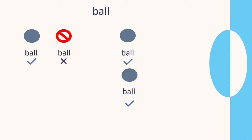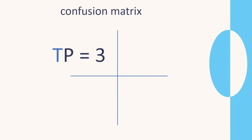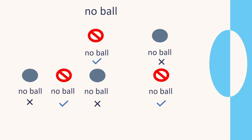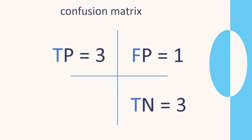In our results, there were four times a ball appeared and we got it correct three times — so three true positives — and one time we got it incorrect, so that's one false positive. For no ball, there were six of them. We guessed three correctly, so three true negatives. And three were false negatives — we got them incorrect. So that is our confusion matrix.